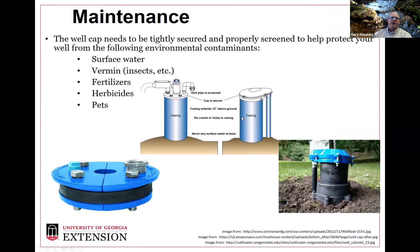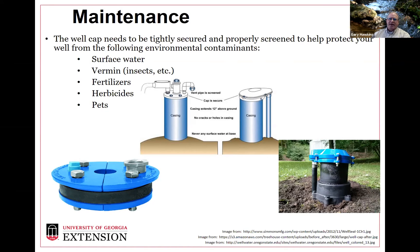For maintenance, if you've got a good well with a good casing, you want to make sure there's a good cap on that casing. Caps come in two forms — a standard cap and a more enclosed well seal. The purpose of both is to keep surface water out of the well and to keep insects, rats, snakes, or anything else out of the well itself. If you're spraying fertilizers or pesticides nearby, you want to make sure those don't get down in the well, and you definitely don't want pets getting in there.